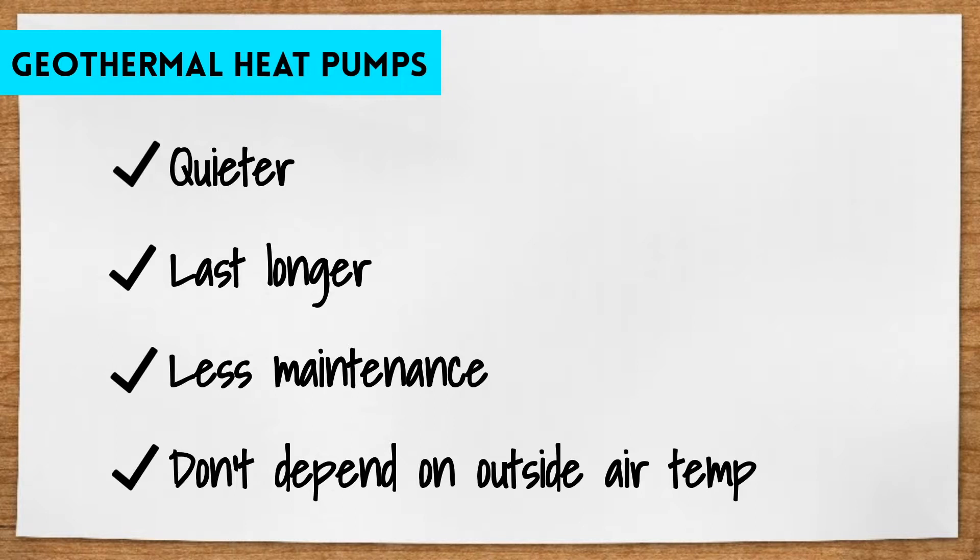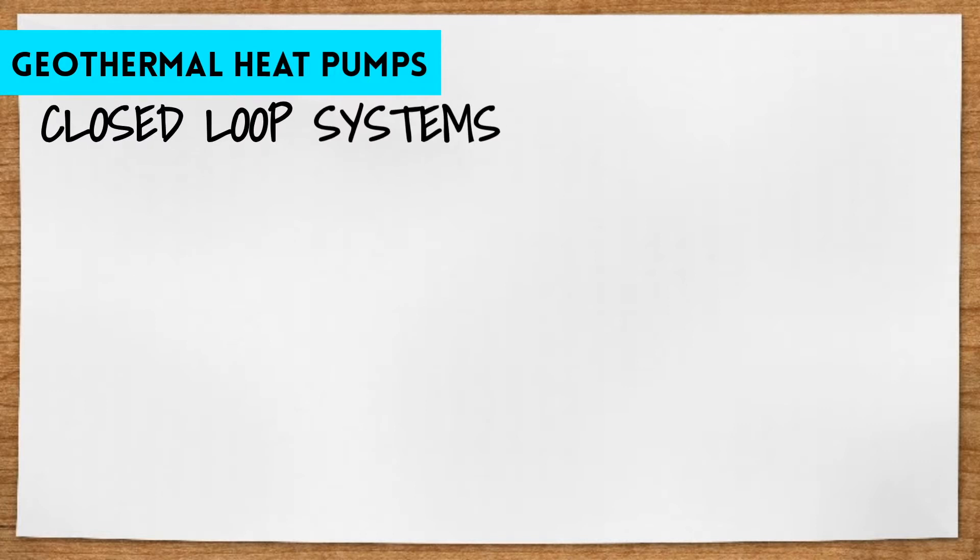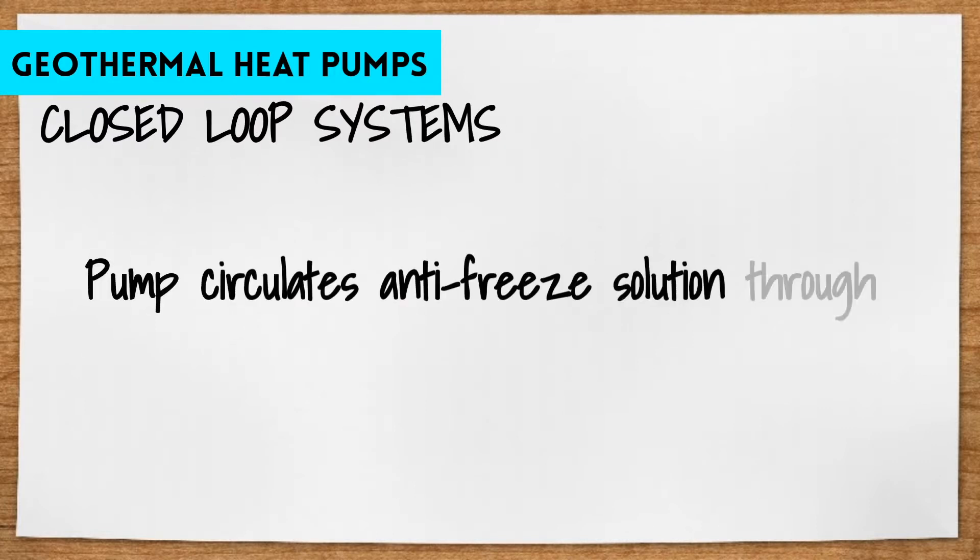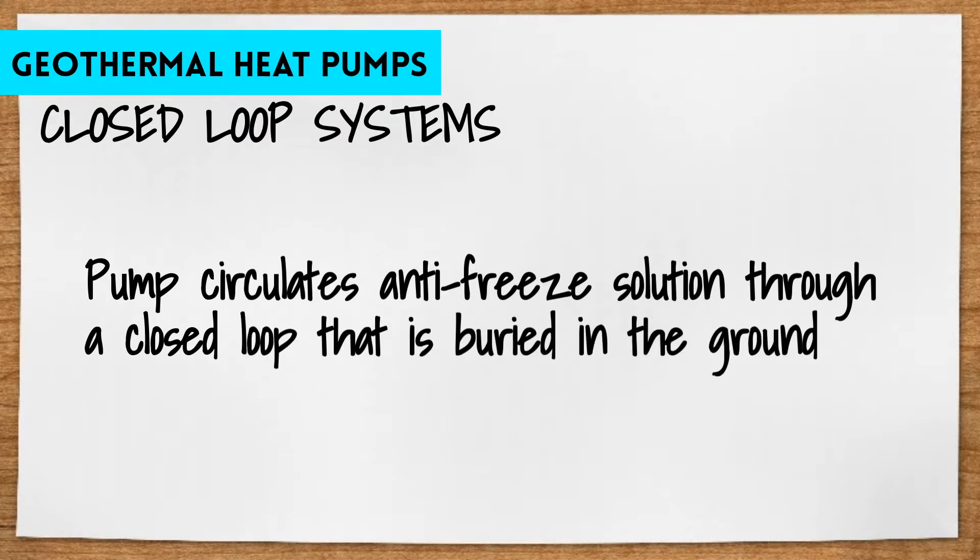There are four major types of geothermal heat pumps to know about. The first three are closed loop systems, meaning the heat pump circulates an antifreeze solution through a closed loop that's buried in the ground or submerged in water. The heat exchanger transfers heat between the refrigerant in the heat pump and the antifreeze solution in the closed loop.